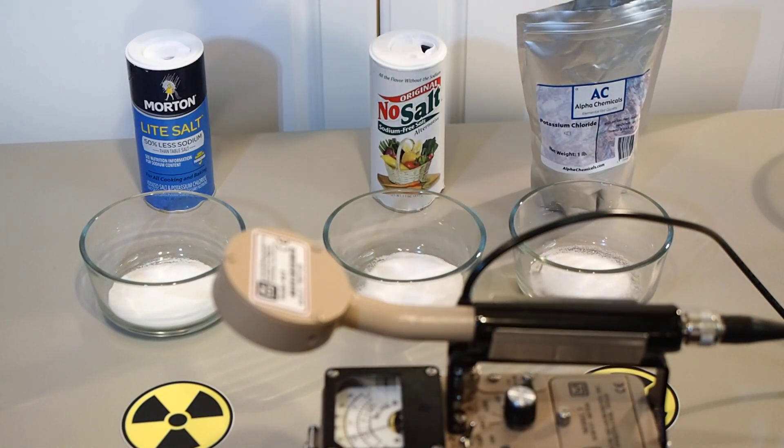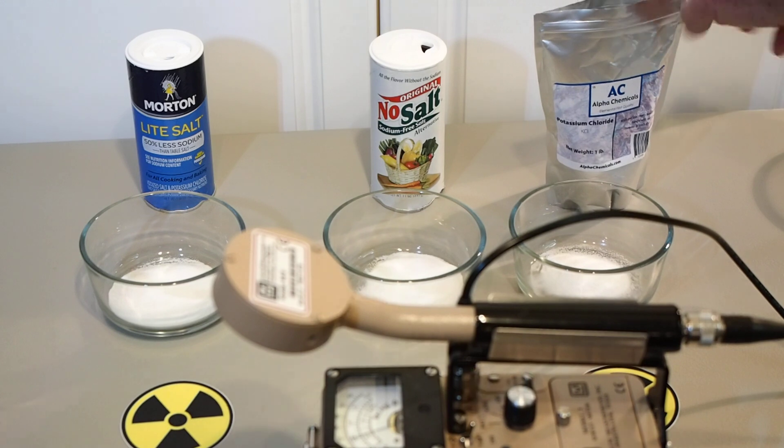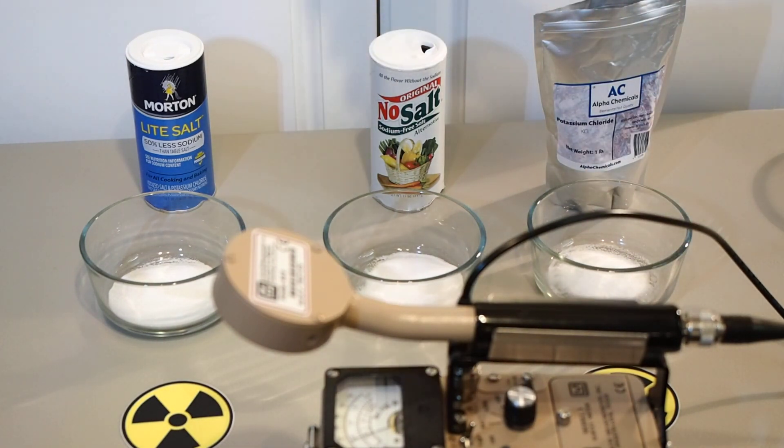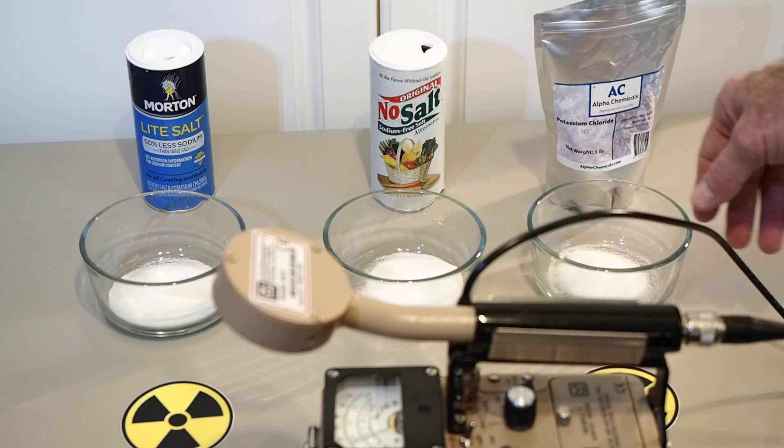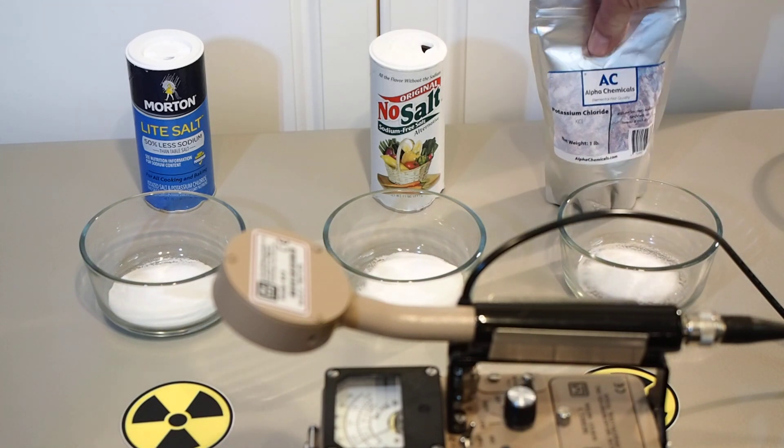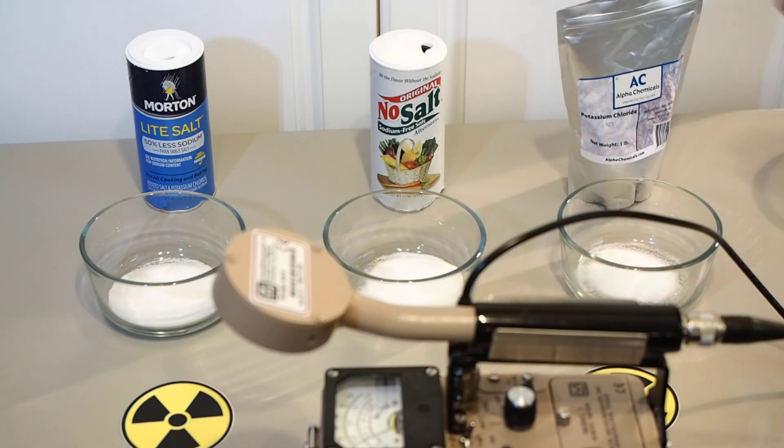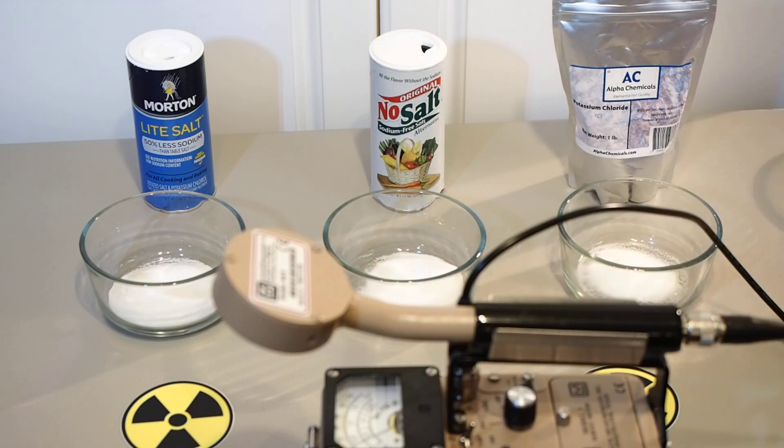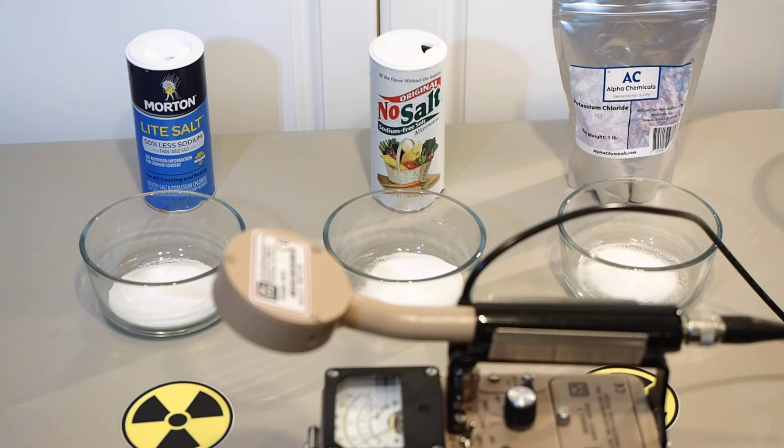Interesting thing is these products are available in most commercial retail establishments. Morton light salt and no salt can be found in just about any Walmart or Target, grocery stores and so forth. Whereas your potassium chloride is usually found in large bags in crystalline form at Home Depot, Lowe's and so forth.